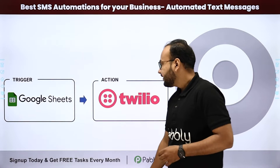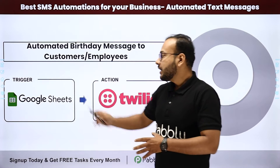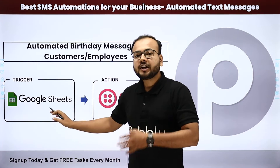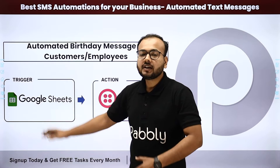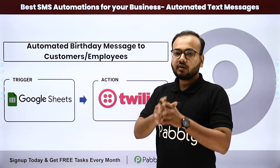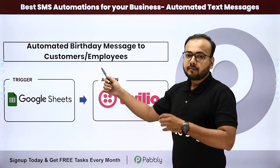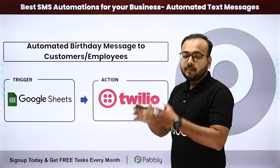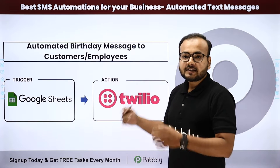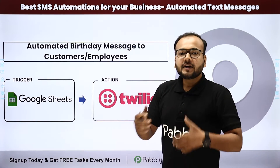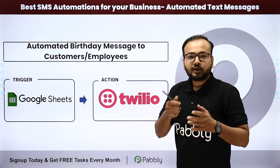The first automation is automated birthday messages to your customers or employees. Here we have connected Google Sheets as the trigger application and Twilio as the action application. In the spreadsheet, we have saved the details of the customers or employees, and as and when the date of their birthday arrives, our automation is going to send birthday wishes to all of them via Twilio automatically. This way you can build a personal connect with your customers and employees, and they'll feel happy that you wished them on their birthdays.